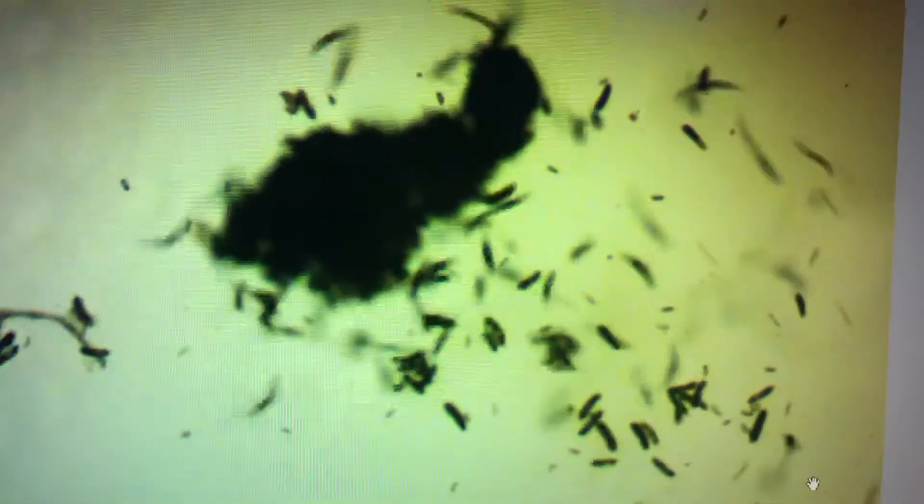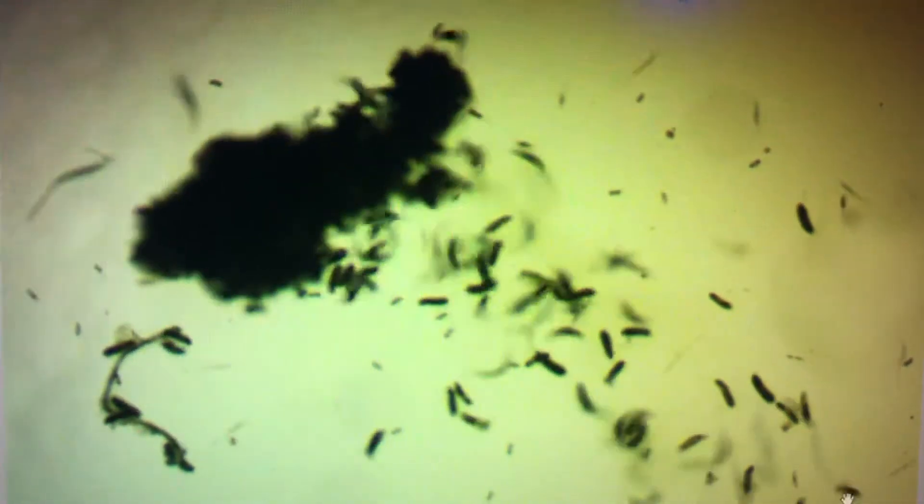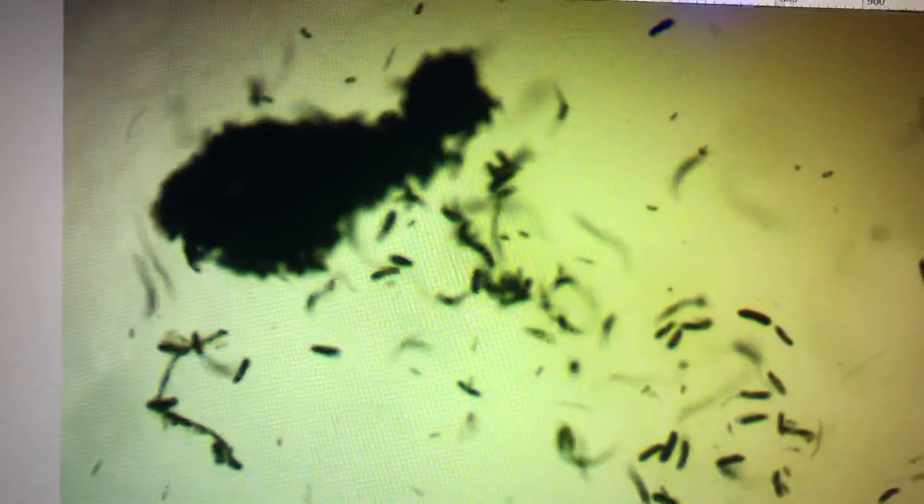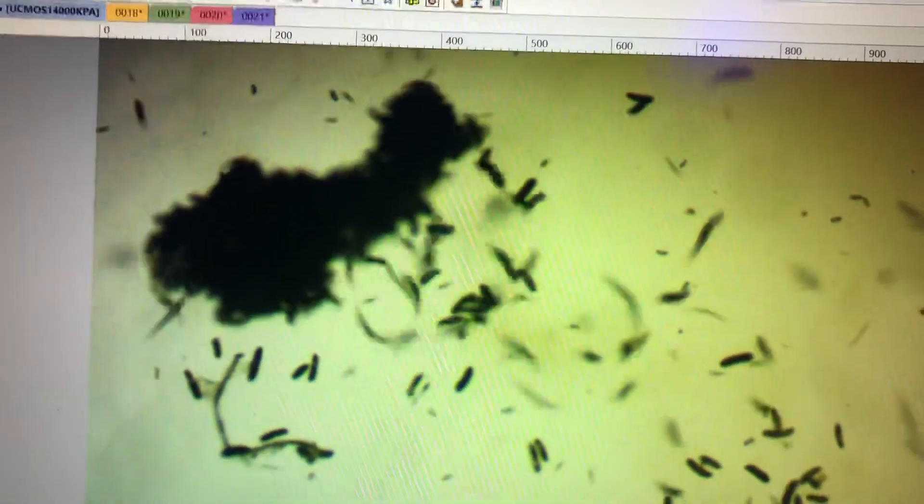They have cousins such as Cryptocaryon, Euplotes, Dysteria, and a couple of others. And those guys, their cousins, cause STN, slow tissue necrosis, bleaching, discoloration. These guys, they cause RTN. And every single coral in your entire system that RTNs, if you take it out, put it in a cup, and wait overnight and put this water under the microscope, this is what you're going to see every single time. You're going to find these guys swimming around. That's because they are the ones causing the RTN, nothing else.